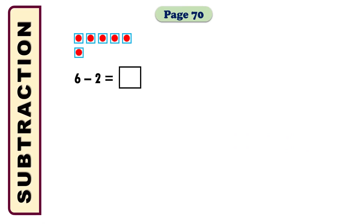In the next example it is 6 minus 2 equals what? I am going to take 6 boxes. After taking the 6 boxes I need to cross 2 among them. After crossing 1 and 2, how many remain? We can count: 1, 2, 3, 4 — there are 4 boxes remaining. That means the answer will be 4. We have taken 6 boxes, crossed 2 among them, and found that 4 boxes remain — so the answer is 4.